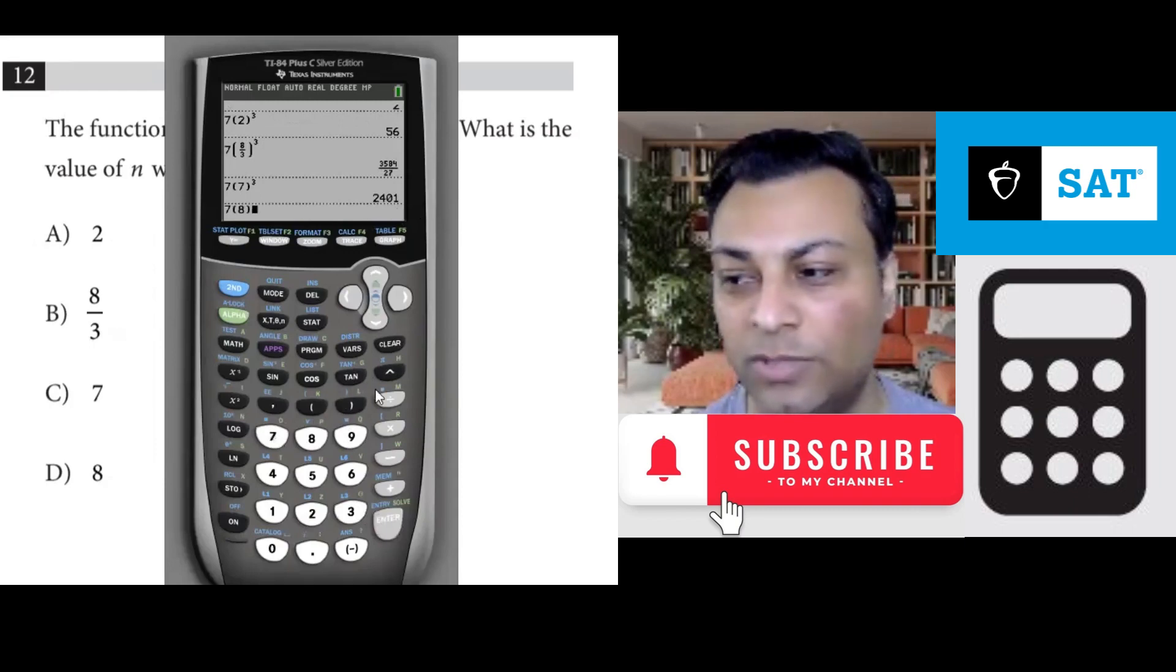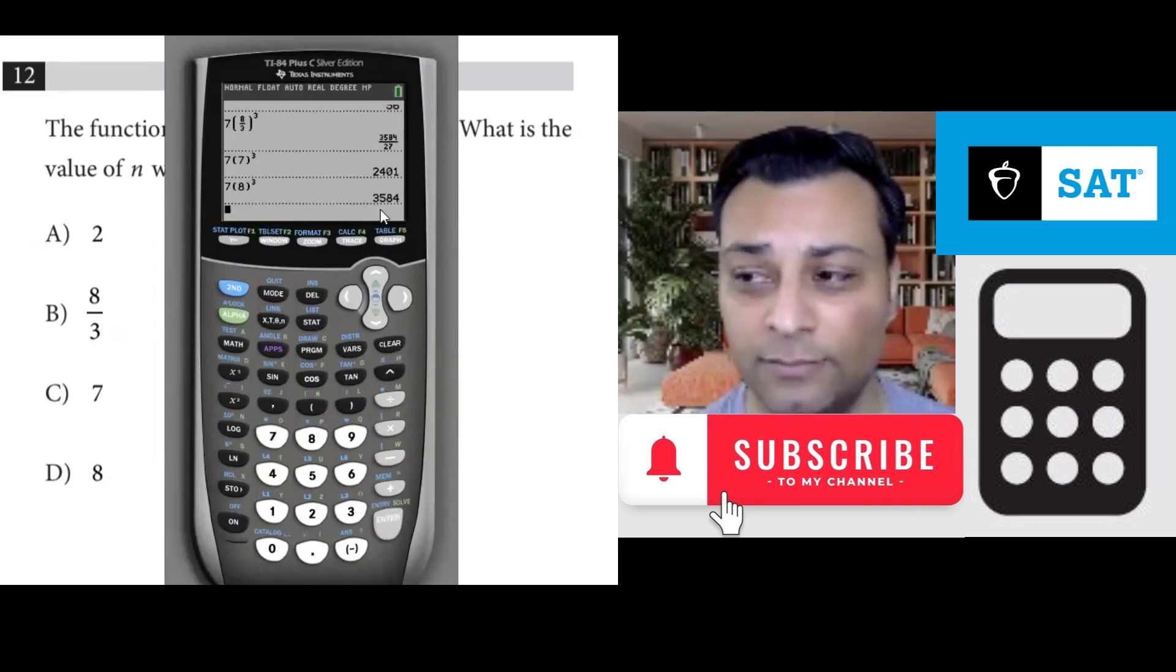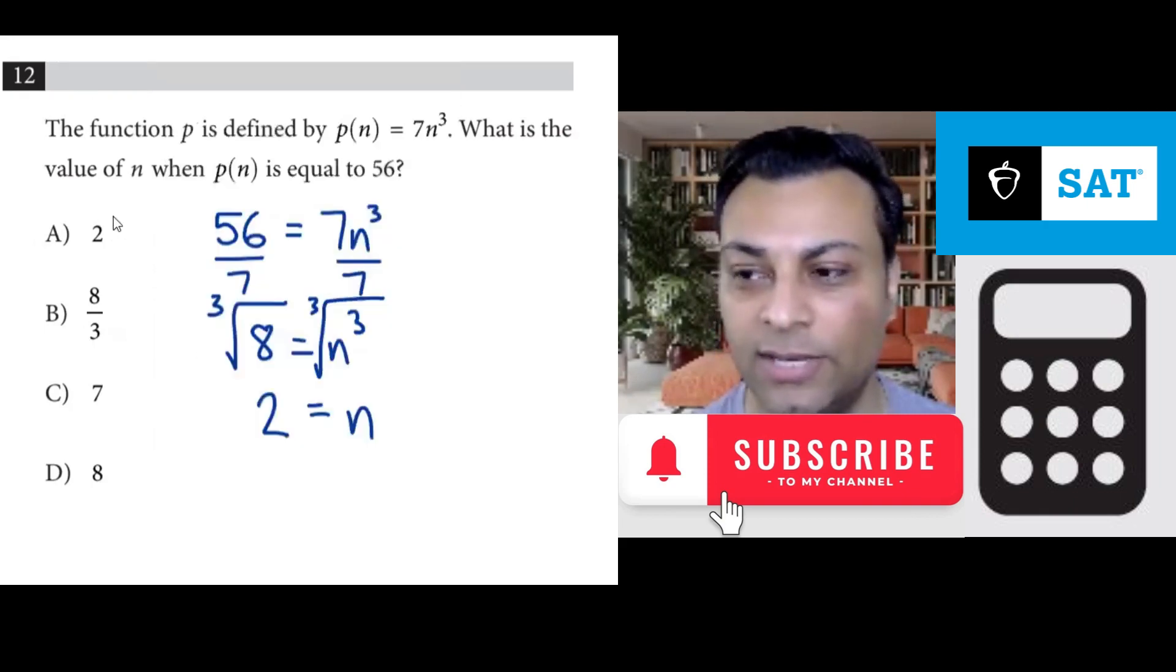7 × 8³ would be even more. It is more than 3,000. This is also not 56. So the first option worked. And that's why the answer is A.